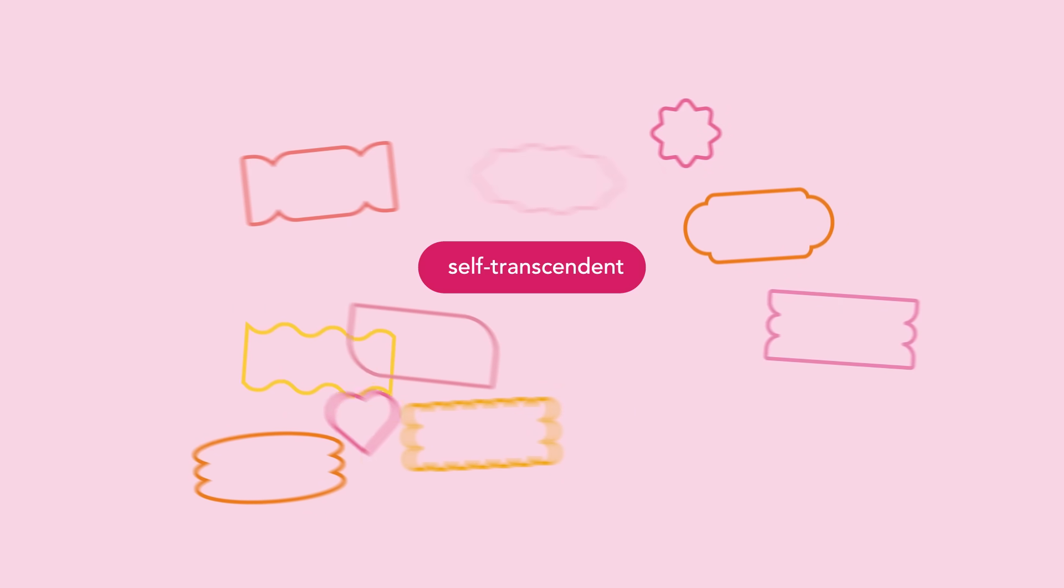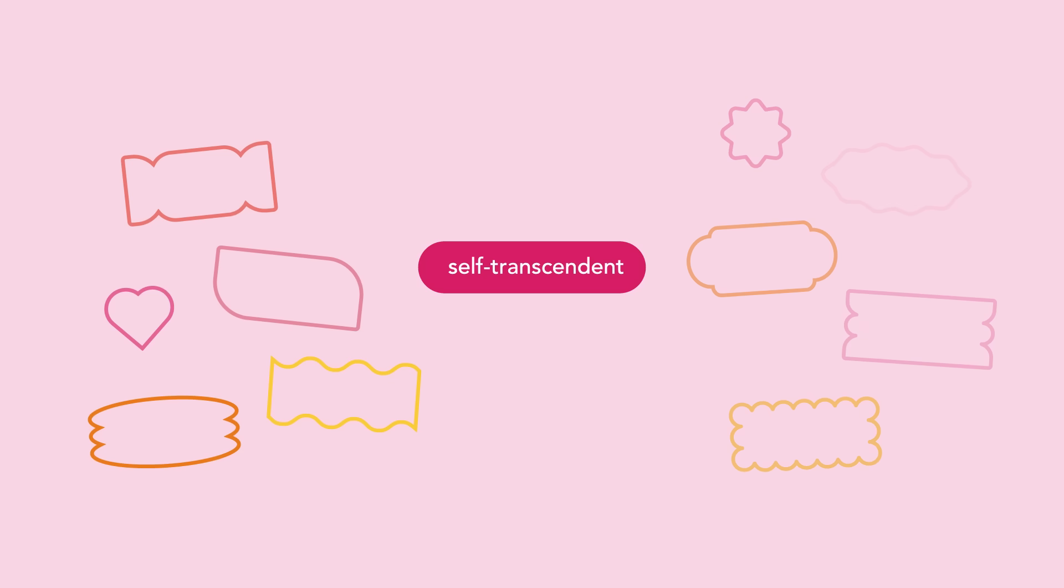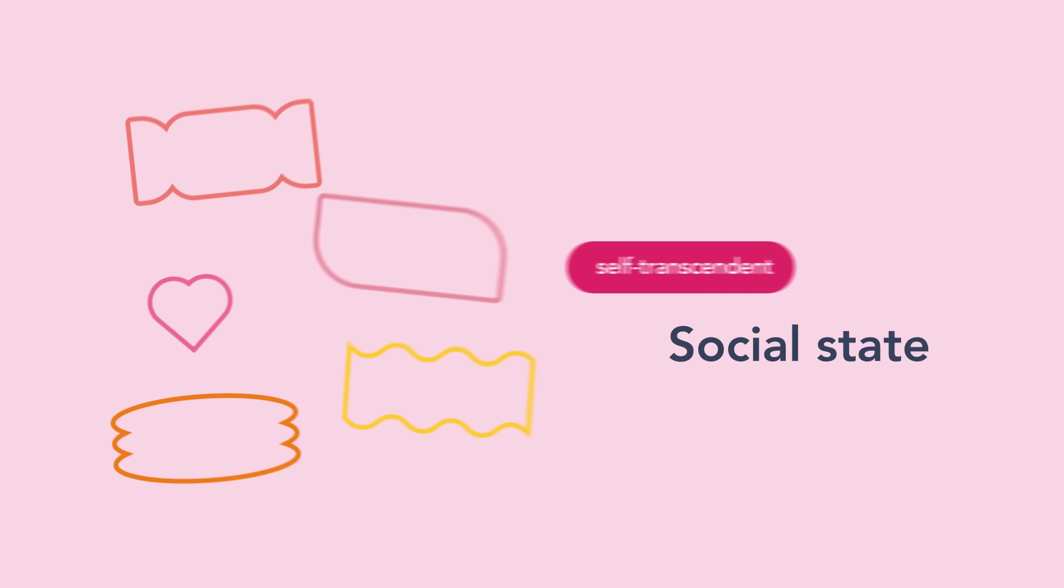In contrast, positive emotions that were self-transcendent formed two other distinct families. The first family, called social state emotions,